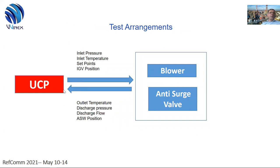The test arrangement was a blower with anti-surge valve. We did not use the discharge piping, as this piping configuration did not have much influence on process dynamic behavior for this particular case study. As input parameters, we used inlet pressure, inlet temperature, set point in regards to output pressure and flow, and IGV positions. Those inputs are supplied to the UCP, and as output parameters we used outlet temperature, discharge pressure, discharge flow, and also anti-surge valve position.